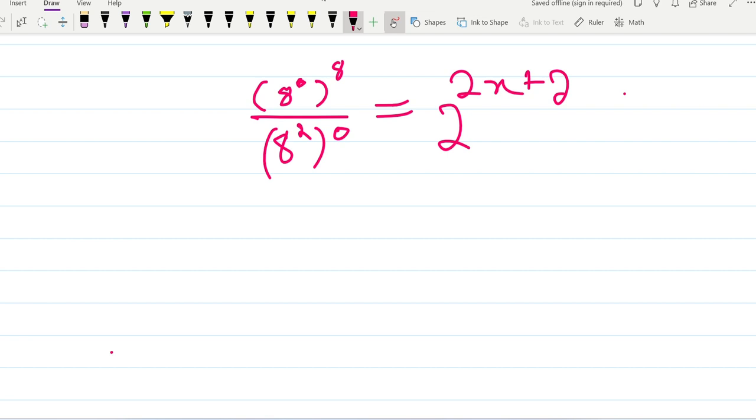Let's get started without wasting time. We all know that a power b, or you can say anything power 0, is equal to 1. This is the universal rule in math.